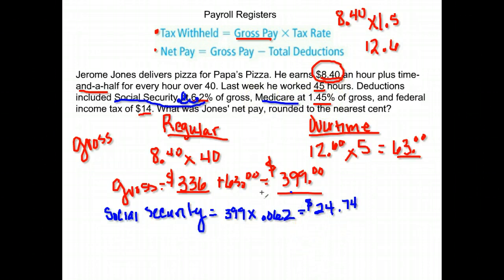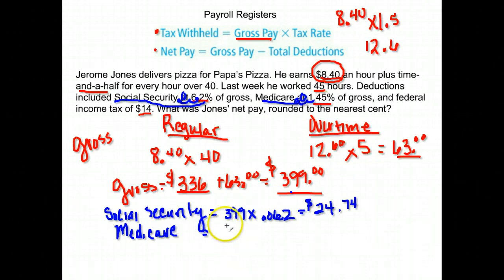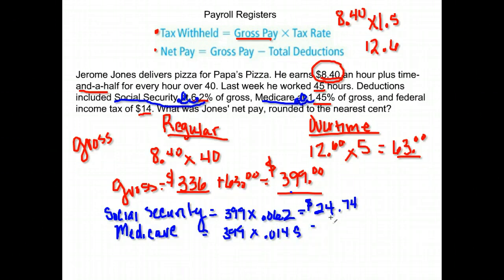The next tax is Medicare. The Medicare rate is 1.45%. Move the decimal two places to the left and we get .0145. Taking that times his gross pay of $399 — so 399 times .0145 — gives us $5.79 for Medicare.